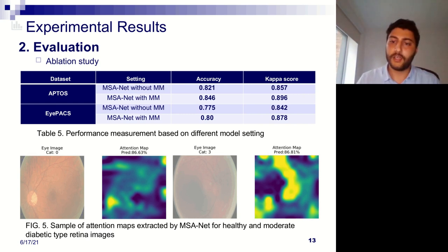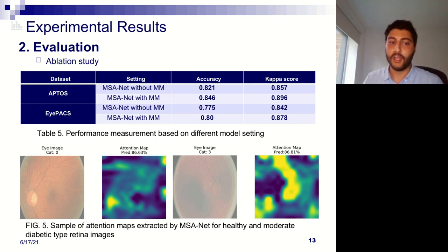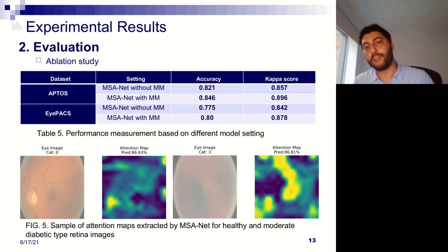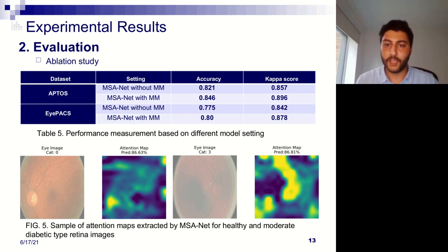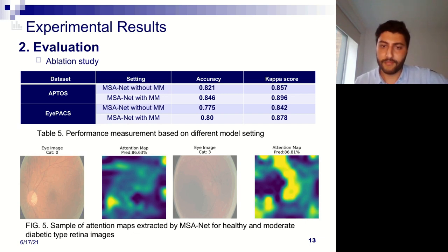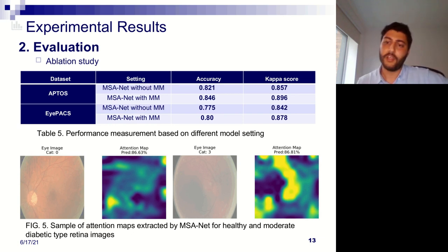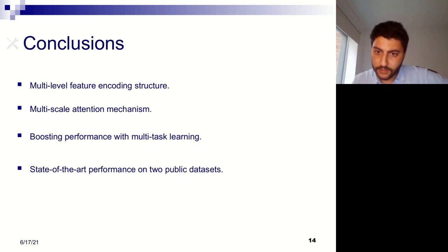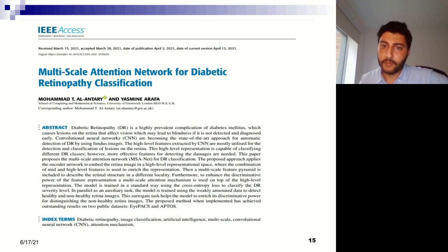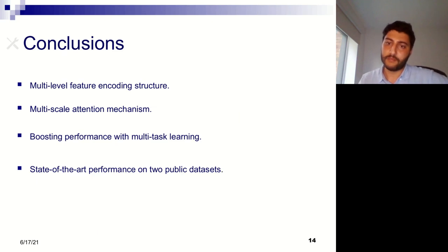Here is an example of how the attention map looks. The attention mechanism helps the model focus on the damaged areas of the retina, encoding more local information to make the final decision about which areas are affecting the classification. As you can see, the attention maps look different for different classes — for example, class 0 (healthy) compared to class 3 (moderate).